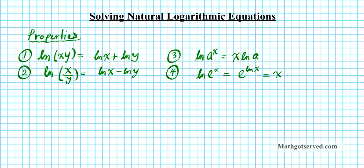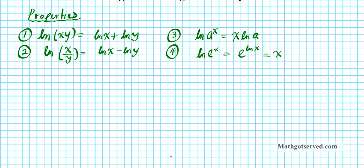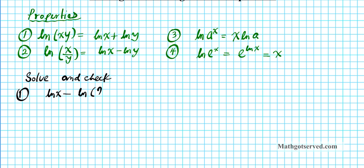So those are the four properties we're going to be using for the two problems today. The instructions for the examples are to solve and check. Problem number one: we have the equation the natural logarithm of x minus the natural logarithm of 2x minus 5 is equal to 5.